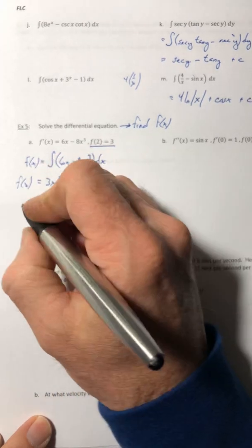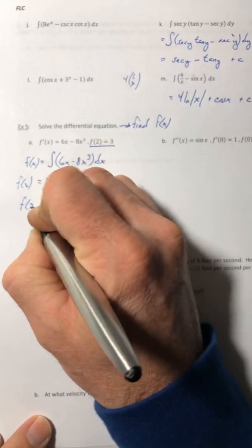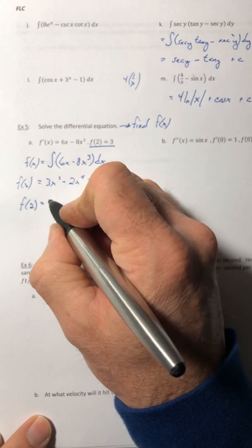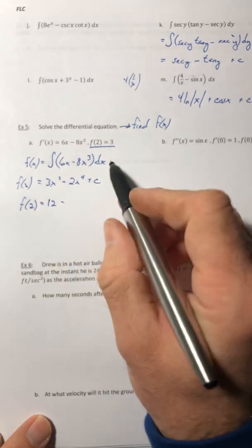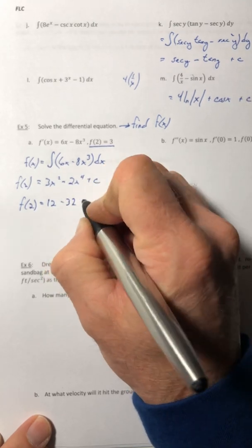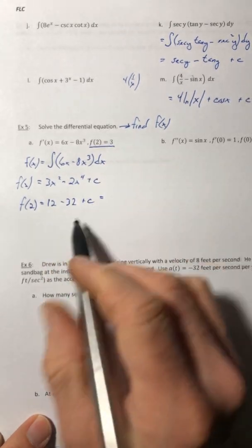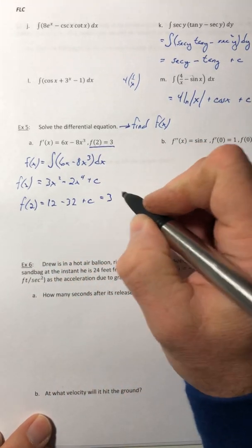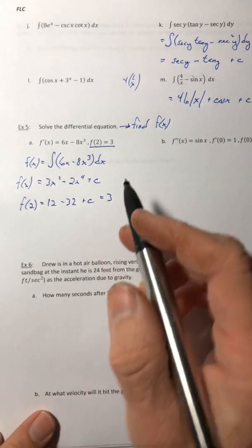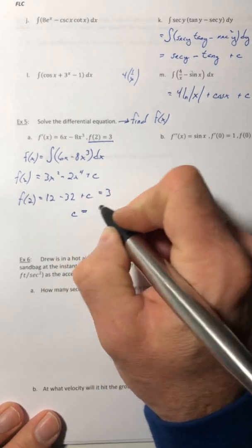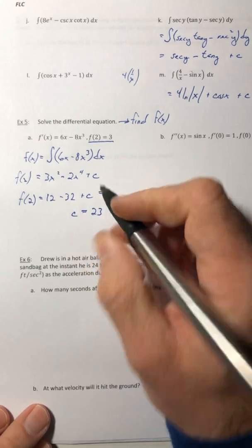So plug the 2 in for x. So it would be 12 minus 2 to the fourth of 16 times the negative 2 is 32 plus c. So when I plug the 2 in, I know it has to equal 3. And so now c is the only variable and now you can solve for it. And c is going to equal 23.